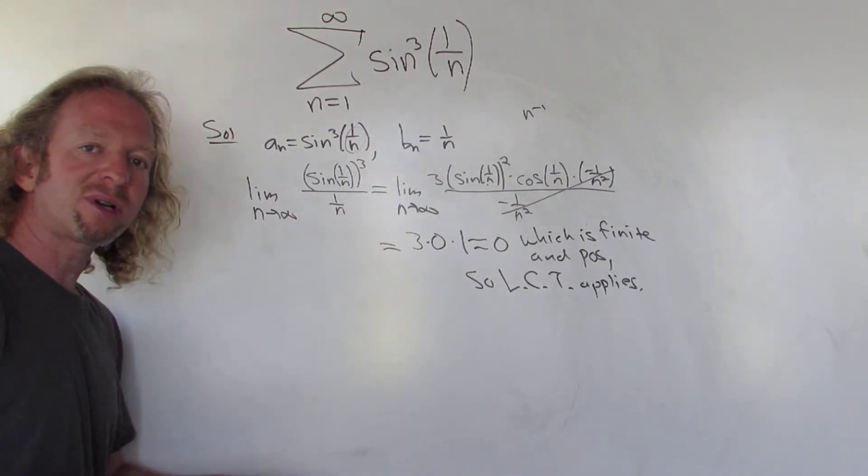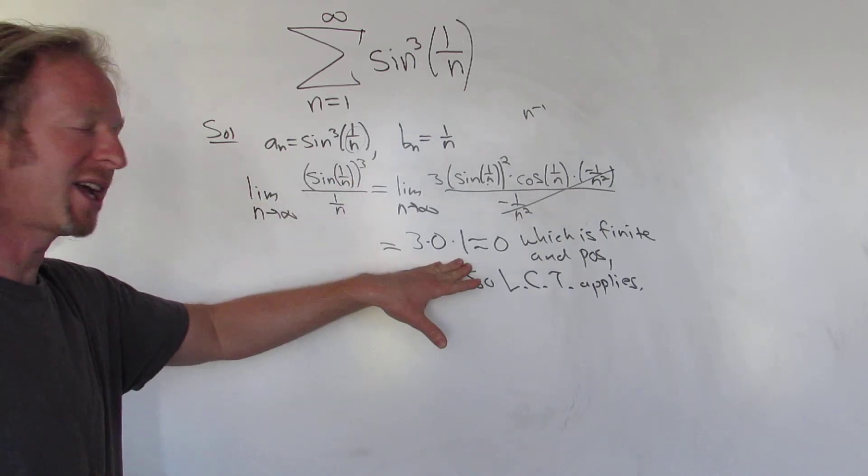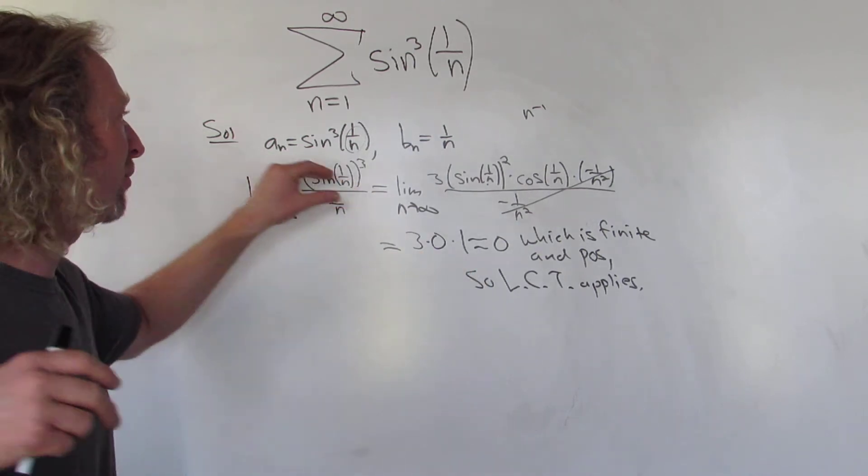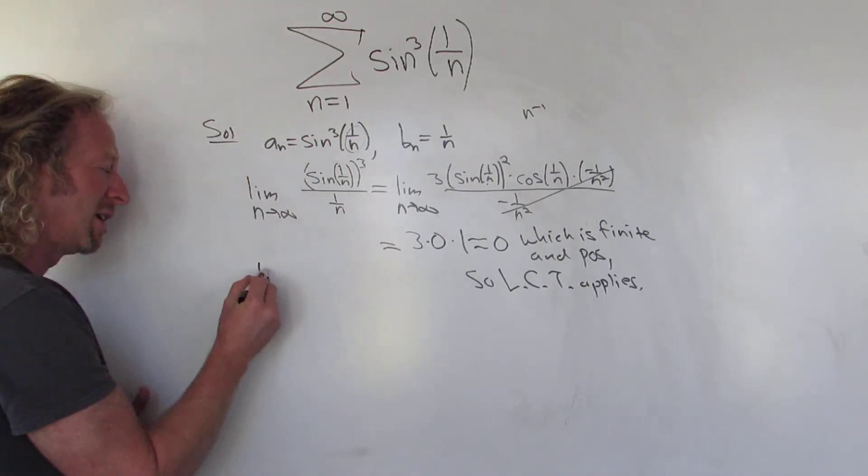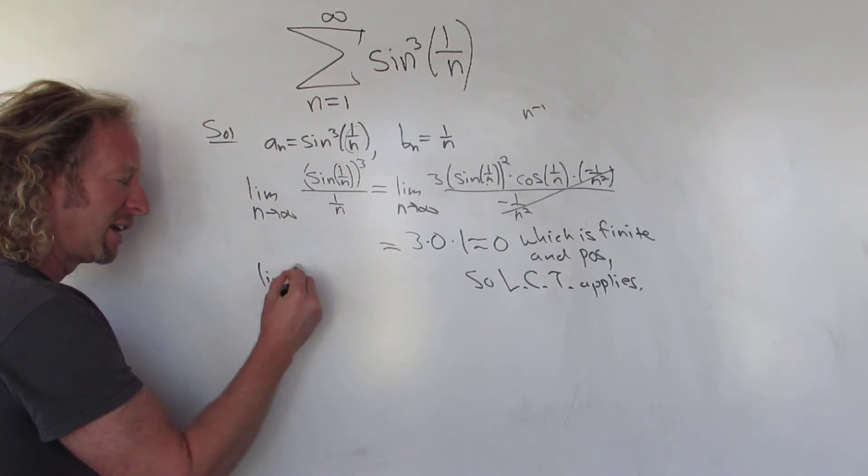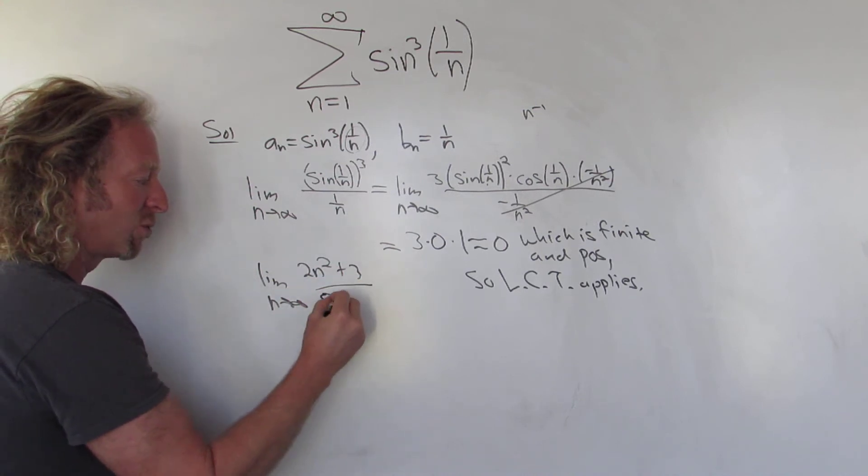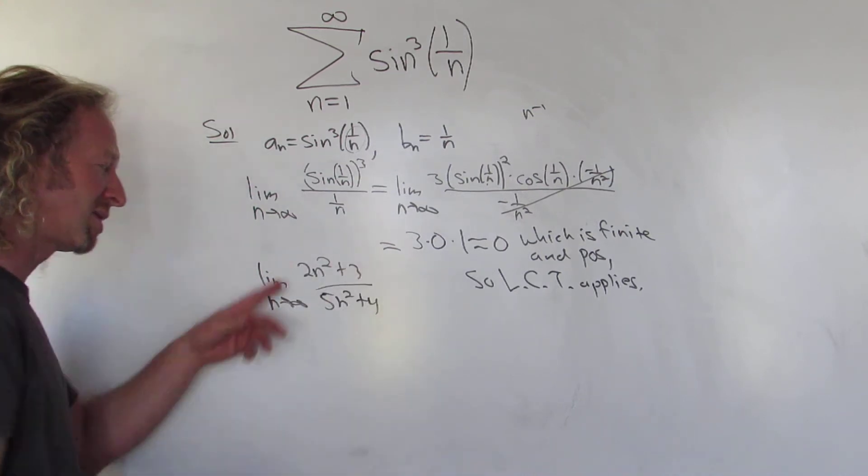And the reason it works is, think about it, if you take a limit like this and you get a finite answer and it's positive, that means that both of these guys behave the same. They have the same growth rate, right? Like think about just regular limits really quickly. I hate to derail, but like if you had 2n squared plus 3 over 5n squared plus 4. These are both quadratics and sure enough, when you take this limit, you just get 2 over 5, right?